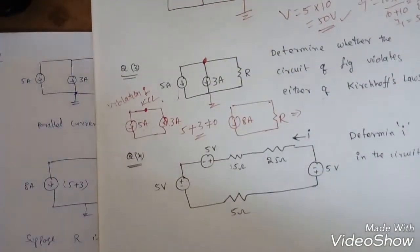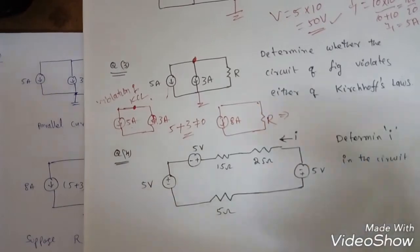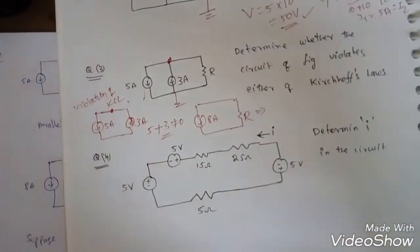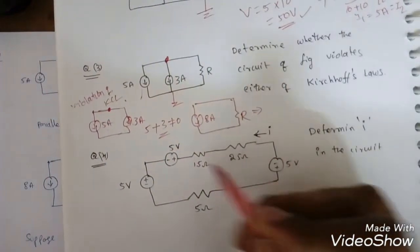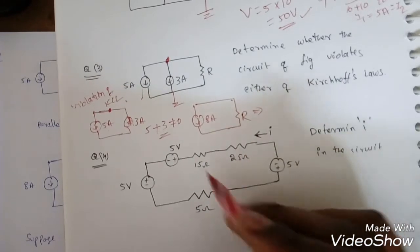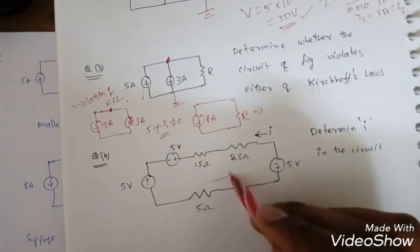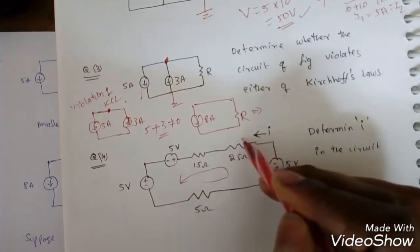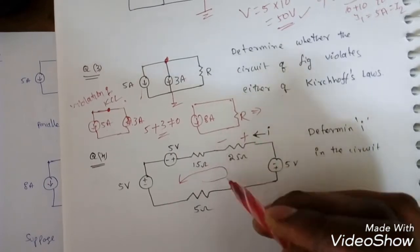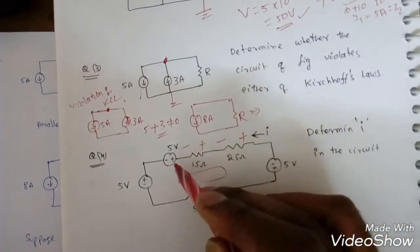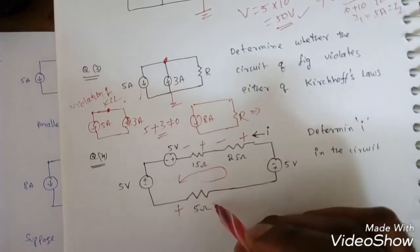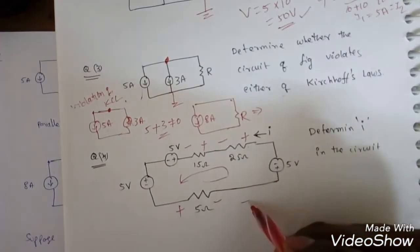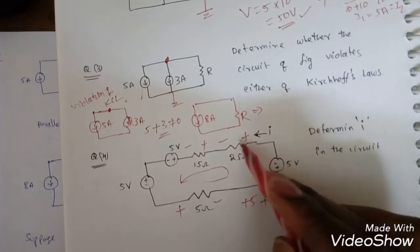This is a continuation of the previous lecture on problem solving. The question asks us to determine I in the circuit. It is a simple one with three resistances and three sources. If I apply KVL, we first need to assign notation. The current is going in this direction, so plus minus markings are assigned, and the sources are already given as plus minus.